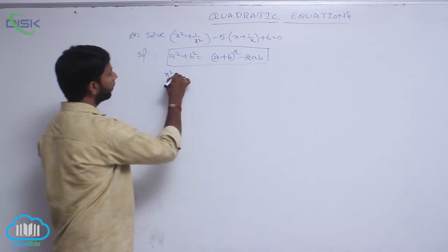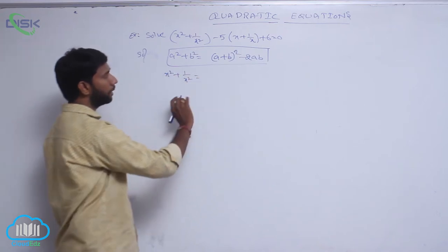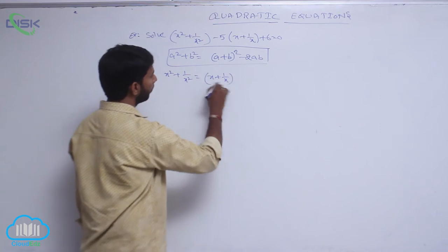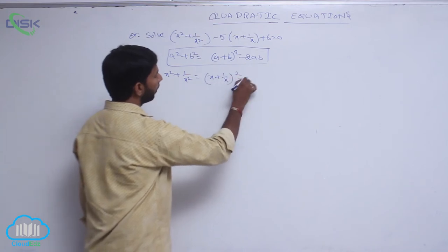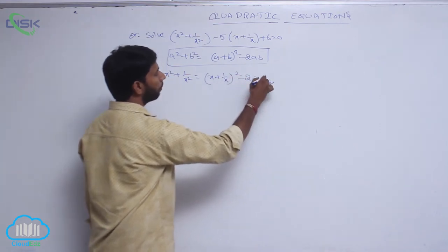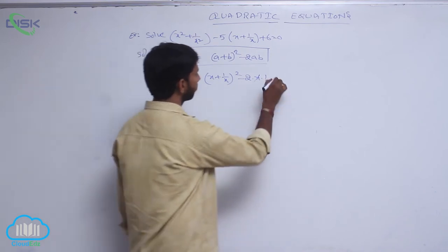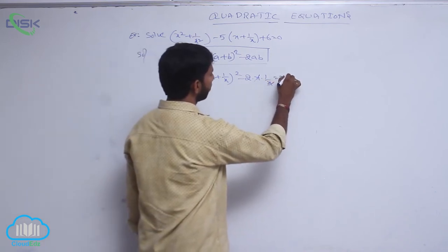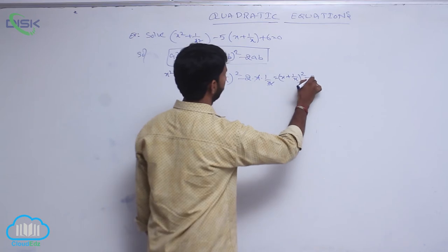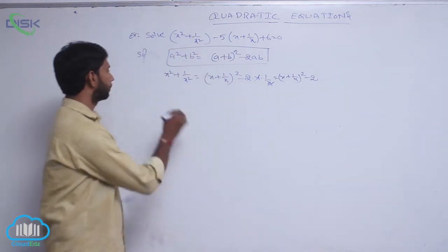That is, x squared plus 1 by x squared can be written as x plus 1 by x whole square minus 2 times x times 1 by x. Here x cancels, giving x plus 1 by x whole square minus 2.